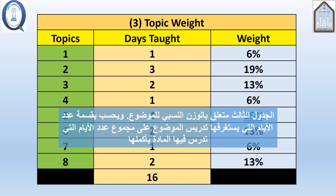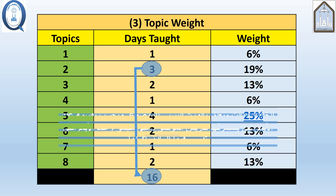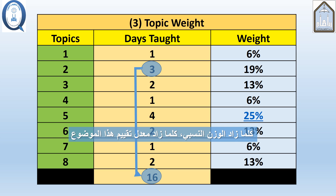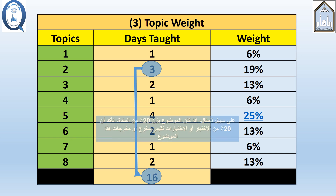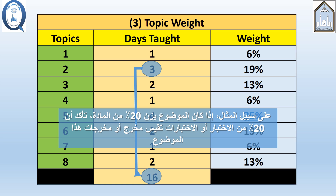The third table describes the topic weight. This is calculated by dividing the number of days spent on each topic by the total number of days the whole course is taught. In this way, the higher the weight is, the more assessment the topic is given. For example, if the topic weighs 20% of the course, make sure that 20% of your tests are assigned to the CLO or CLOs that topic contributes to.